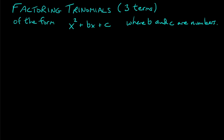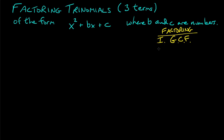Let's continue with factoring. In the previous videos we talked about how to find and factor out the GCF — that's always the first stage of factoring. Whenever you're factoring, the first thing you should always think about is factoring out the GCF. Then if you have four terms in your polynomial, you try to factor by grouping — grouping them into two and two, the first two terms and the second two terms separately.